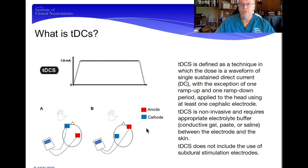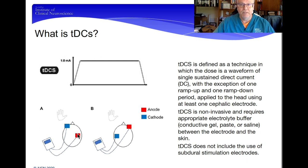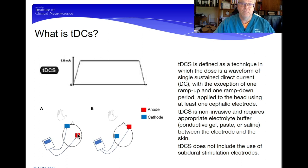We can change the effect of the stimulus inside the brain simply by changing the electrode configuration. From an anode-cathode configuration, just simply changing the anode-cathode configuration changes the areas of excitability, areas of inhibition, and the functional pathways that get affected or changed in between those electrodes.